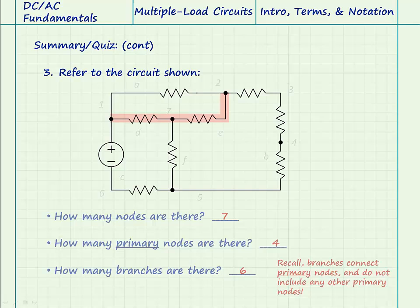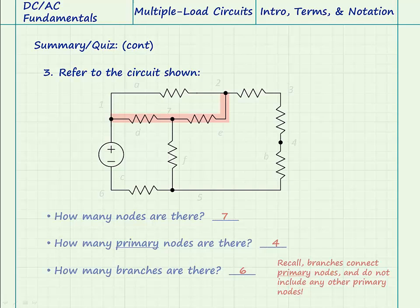Here's a path that connects primary nodes one and two. Is this a branch? No, this is not a branch because it includes the primary node seven, which is not allowed by the definition of a branch.